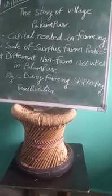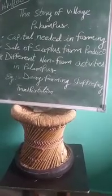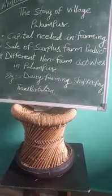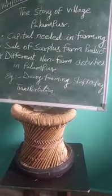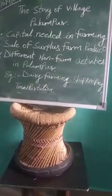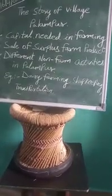Question three: What are the four factors of production? Answer: Land, labor, physical capital, and human capital are the four factors of production.